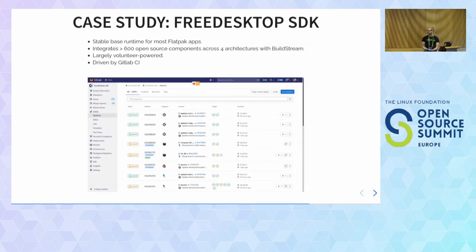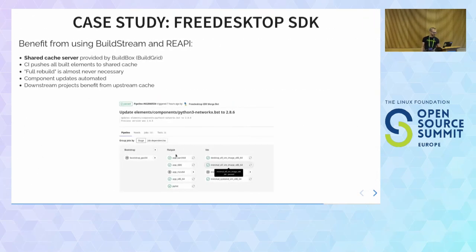The Free Desktop SDK is a runtime and SDK for building Linux apps. It has about 600 components for four architectures. It's mostly powered by volunteers with some sponsors for infrastructure, which means the development process has to be super efficient. To achieve that, they use a combination of GitLab CI to automate as much testing as possible, and BuildStream. Here's an example pipeline for a random commit — updating a Python package — built for four architectures: ARM64, Intel 32 and 64-bit, and RISC-V 64-bit.